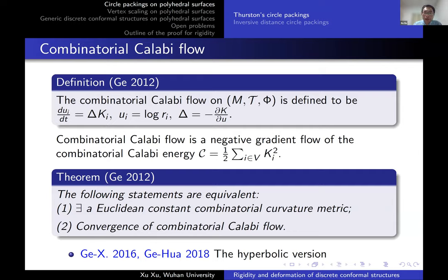Another effective flow is the combinatorial Calabi flow, introduced by Ge in his PhD thesis as an analog of the smooth Calabi flow. It deforms the factor u_i according to the discrete Laplacian of the curvature. The combinatorial Calabi flow is a negative gradient flow of the combinatorial energy. Ge first proved equivalence between convergence of the combinatorial Calabi flow and the existence of a constant combinatorial curvature metric. Ge and myself further studied the harmonic version under similar results.